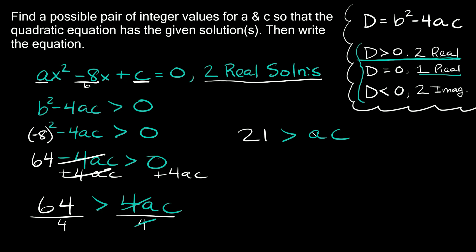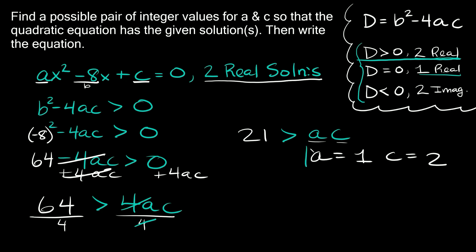Now we can plug in whatever numbers we want for a and c to make this inequality true — we just have to make sure that when we multiply a and c together they are less than 16. For example, we can say a is equal to 1 and c is equal to 2, because 1 times 2 equals 2, and 2 is obviously smaller than 16. These numbers work great.